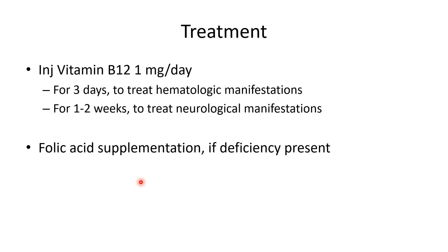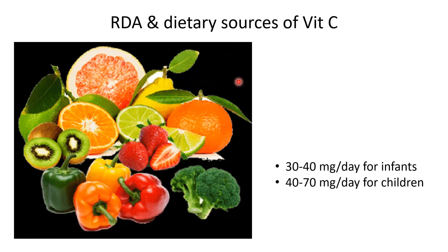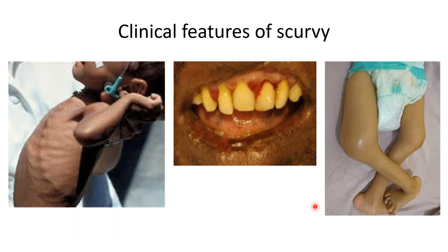Vitamin C dietary sources include citrus fruits like oranges, lemons, sweet lime, and kiwi, as well as capsicum, broccoli, strawberry, and pear. The RDA is 30–40 mg/day for infants and 40–70 mg/day for children. Vitamin C is an important component of collagen synthesis; deficiency leads to scurvy, with defective collagen causing fragile blood vessels.